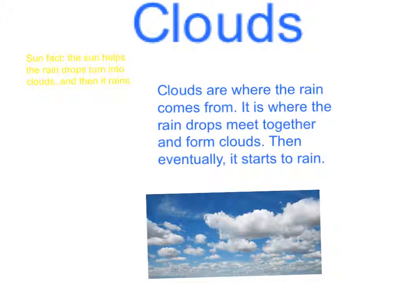Clouds are where the rain comes from. It is where the raindrops meet together and form clouds, and then eventually it starts turning. Sun fact: the sun helps the raindrops turn into clouds, and then it rains.